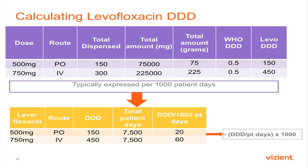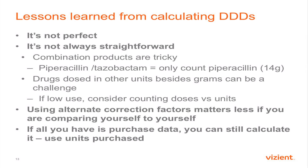I know that's hard to follow in a lecture — take it back and walk through the exercise and you'll see how to calculate it. Combination products like colistin and penicillin get tricky with different units. I'd suggest starting with drugs calculated in milligrams or grams. This is a good way to compare yourself to yourself over time. If all you have is purchase data, take units bought, convert to grams, and calculate your DDD from there.